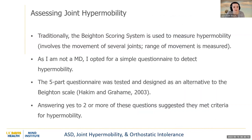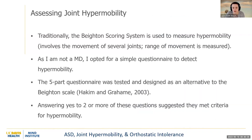To assess joint hypermobility, traditionally the Beighton scoring system is used to measure hypermobility, and this usually involves the movement of several joints with range of movement measured. As I am not an MD and I didn't see the patients in person, I opted for a simpler questionnaire. This five-part questionnaire was tested and designed as an alternative to the Beighton scale, and answering yes to two or more questions suggested criteria for hypermobility were met.